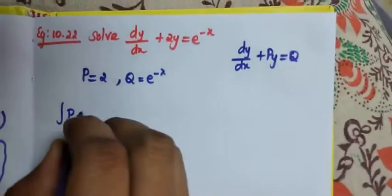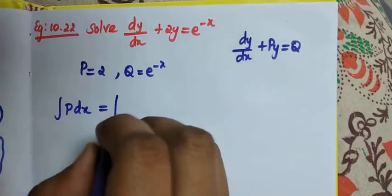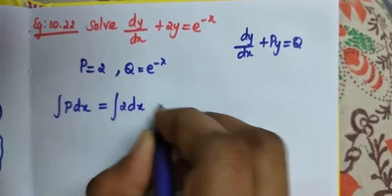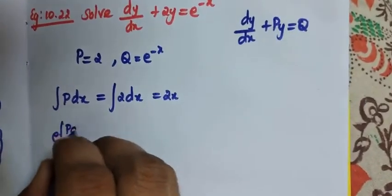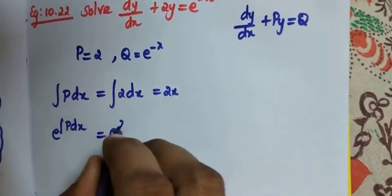First we have to find out ∫p dx. So ∫2 dx which is equal to 2x. So e^(∫p dx), which is e^(2x).